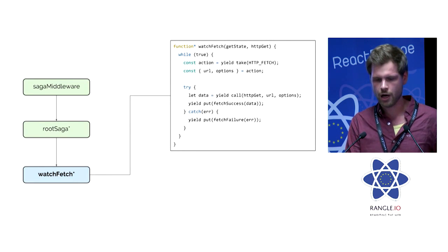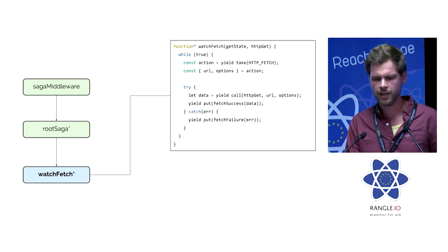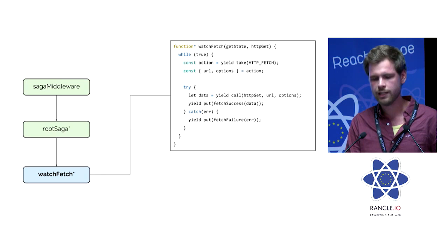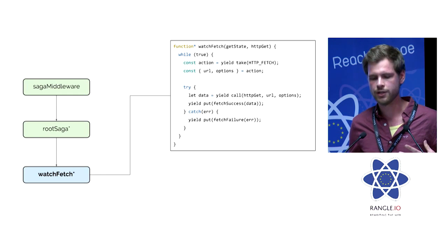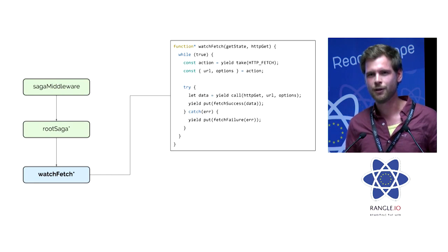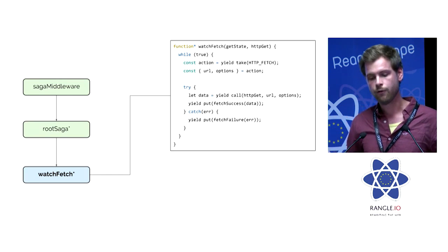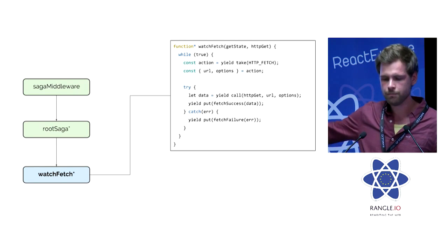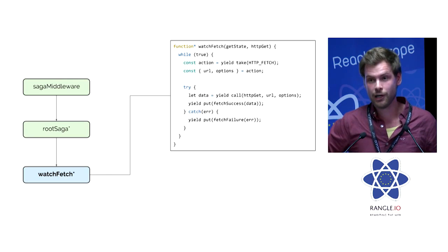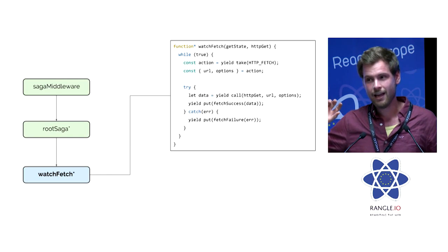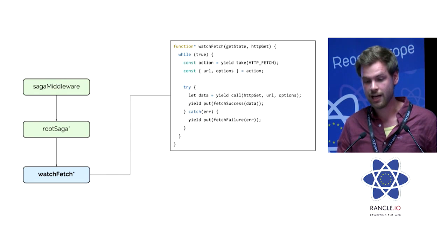The watchFetch generator looks strange because we have an endless loop — 'while true' — but this is fine in the generator context, since it will only run until the next yield statement. When it hits a yield it stops there, and as soon as you call 'next' on the iterator it starts working again, goes back to the while loop, and waits for the next effect to happen. Here you can see we yield a 'take' effect, which tells the middleware: if you get an action dispatched with the type HTTP_FETCH, call this procedure.